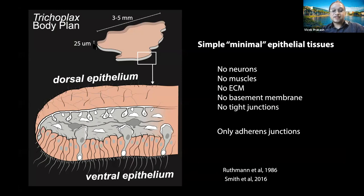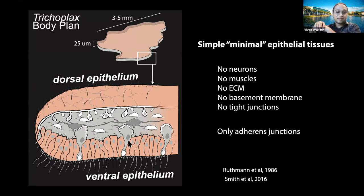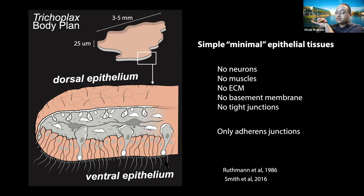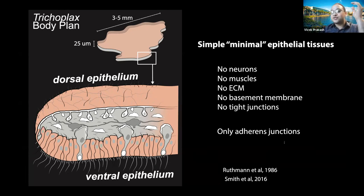Here is the body plan of Trichoplax. These are extremely flat animals like pancakes — 25 microns in thickness but many millimeters in size. It's a three-layer structure: a dorsal epithelium, a ventral epithelium, and a layer of fiber cells in between, with very different cell architectures. Importantly, there are adherent cilia at the bottom — these animals actually crawl on substrates and the cilia can generate traction forces. These animals are special because they don't have neurons, no muscles, no ECM, no basement membrane, no tight junctions. They are simple, minimal epithelial tissues, making them exciting to ask what such a simple system can accomplish from a mechanics point of view.